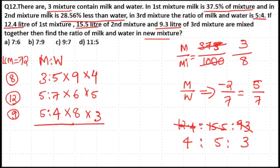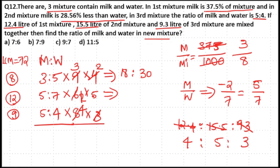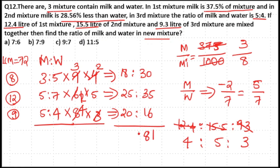Cancelling common factors: 3 cancels giving 3 into 2 is 6 and 3 into 3 is 9; 2 cancels giving 2 into 2 is 4 and 2 into 4 is 8. The first ratio becomes 18 to 30 (6 into 3 is 18, 6 into 5 is 30). The second ratio gives 25 to 35. The third ratio gives 4 into 5 is 20 and 4 into 4 is 16. Adding milk parts: 6 plus 5 plus 1 gives 81 total milk contribution, and adding water parts gives 63. Simplifying 63 to 81 by dividing by 9, since 9 into 7 is 63 and 9 into 9 is 81, the ratio is 7 to 9.